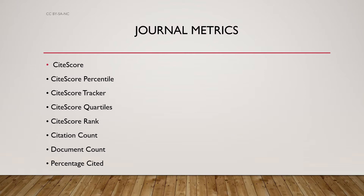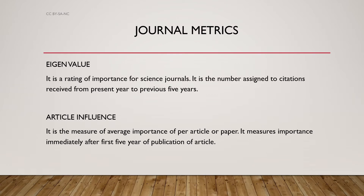Eigenfactor is a rating of importance for a science journal. It is the number assigned to citations received from the present year going back to the previous five years. Article Influence is the measure of the average importance per article or paper. It measures importance immediately after the first five years of publication of the article.